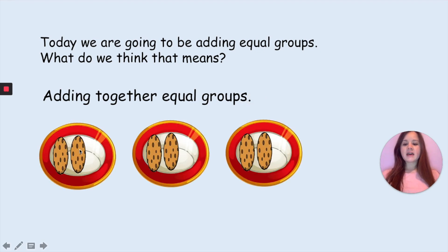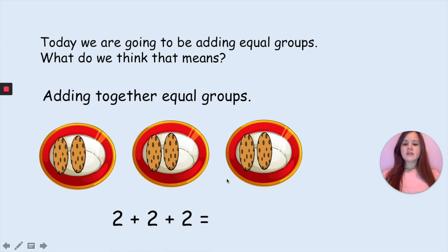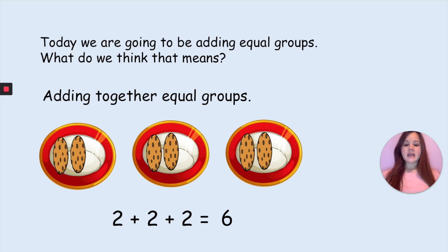So here we have three equal groups of two cookies: 1, 2 — 1, 2 — 1, 2. So it's really important that we count them all just so that we are sure. Your number sentence would look like this: two add two add two equals. And then we can count in twos: two, four, six. The answer is six — we have six cookies all together.